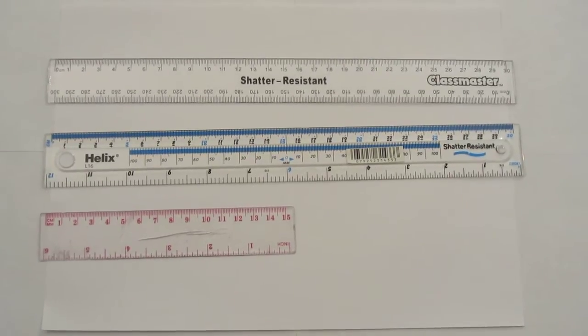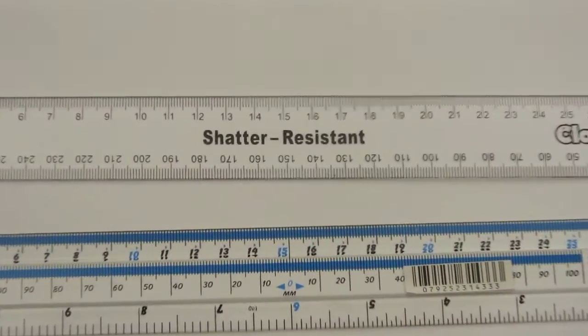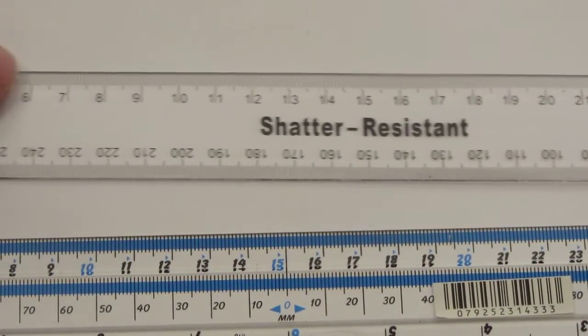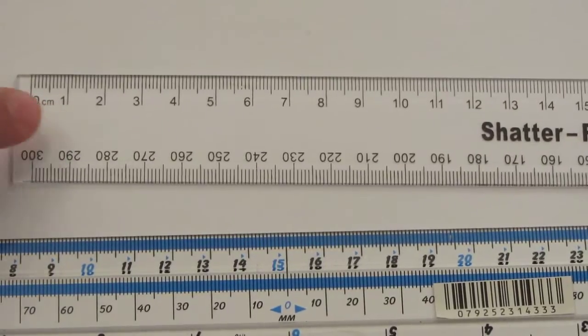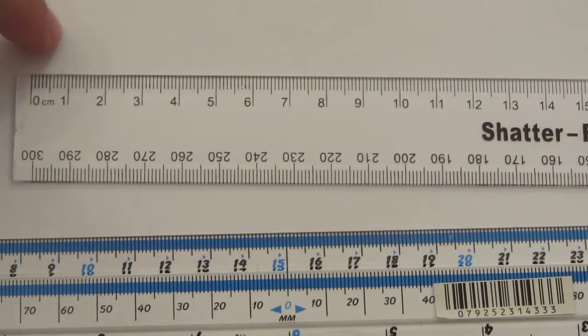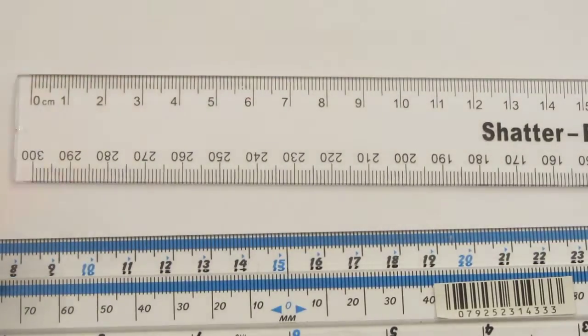Let's zoom in and have a closer look at the units on these rulers, starting with the top one. The funny thing about rulers is that they usually have two scales, one at the top and one at the bottom, and this one is no exception.